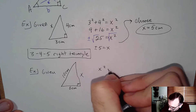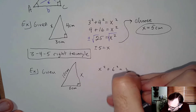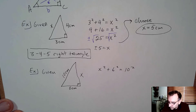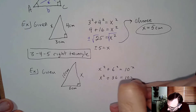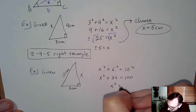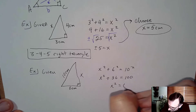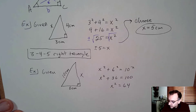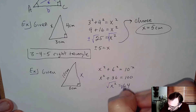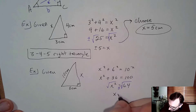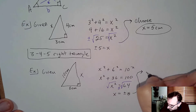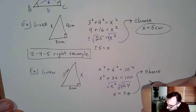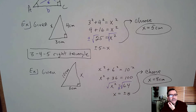Since it's a right triangle the Pythagorean Theorem applies: x squared plus 6 squared equals 10 squared — leg squared plus leg squared equals hypotenuse squared. Subtracting 36 from both sides we get x squared equals 64. Taking the square root of both sides — don't forget the plus or minus — we get x equals plus or minus 8. Since this is geometry we choose x to be 8 centimeters, and we have all sides of the right triangle.